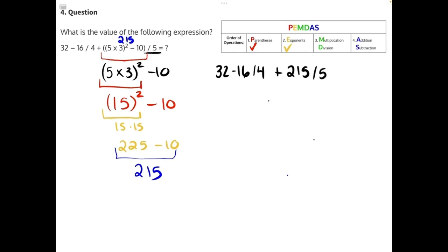So now we can continue through PEMDAS. We did parentheses, there are no exponents, so now we need to do multiplication and division. There is one set of division here and one set of division here, but no multiplication. Let's go from left to right.